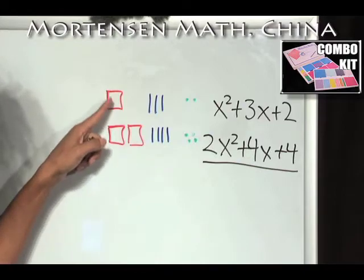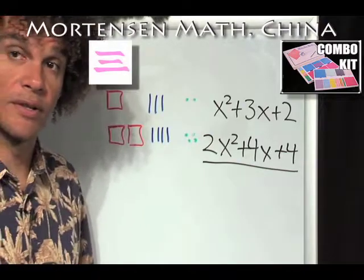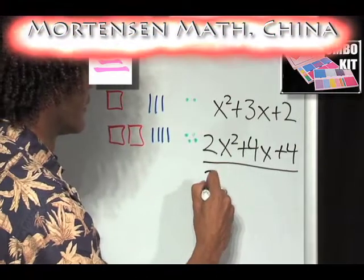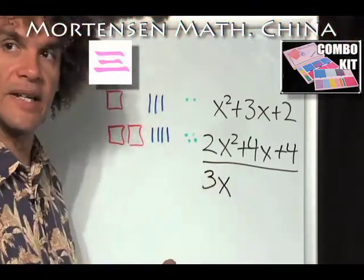How many x squared? We're counting the big ones first. 1, 2, 3. What kind? 3x squared.